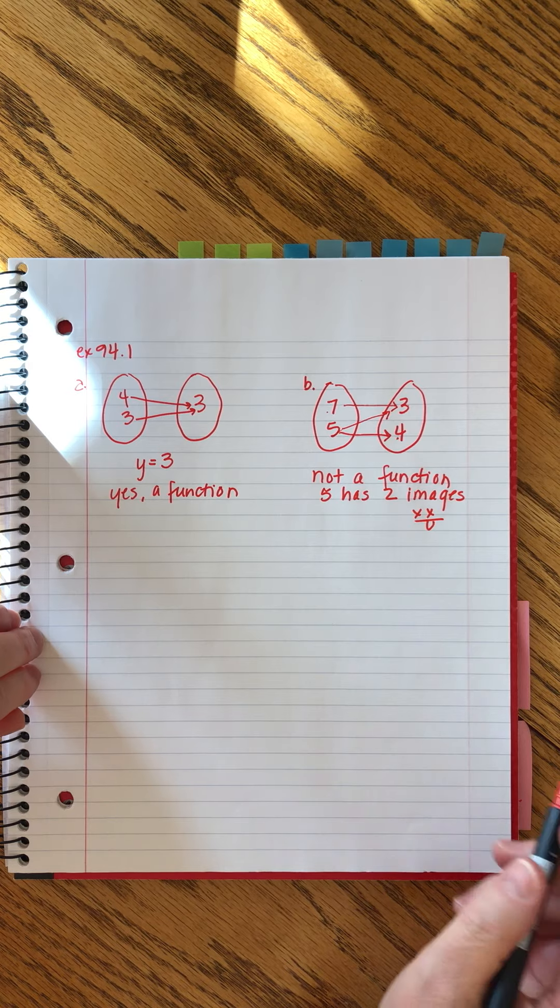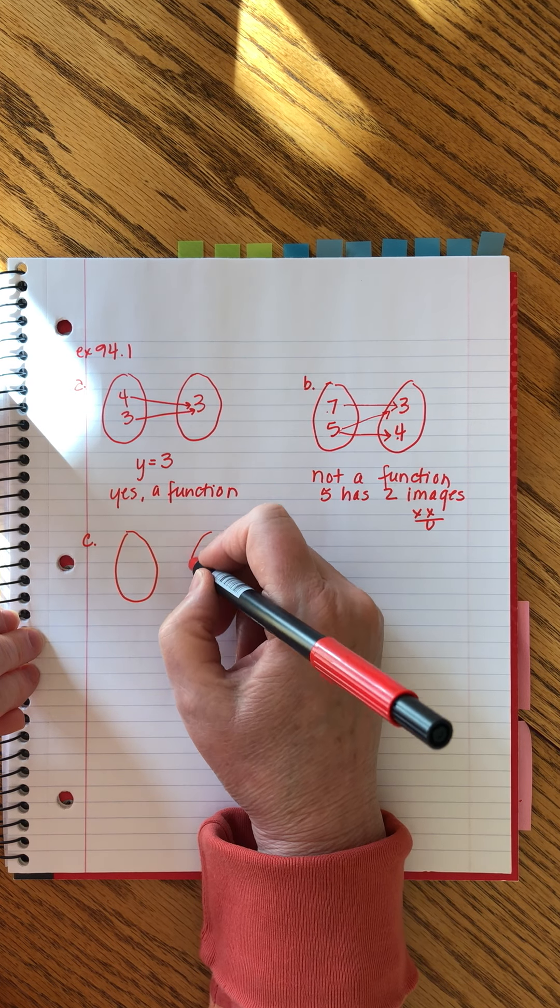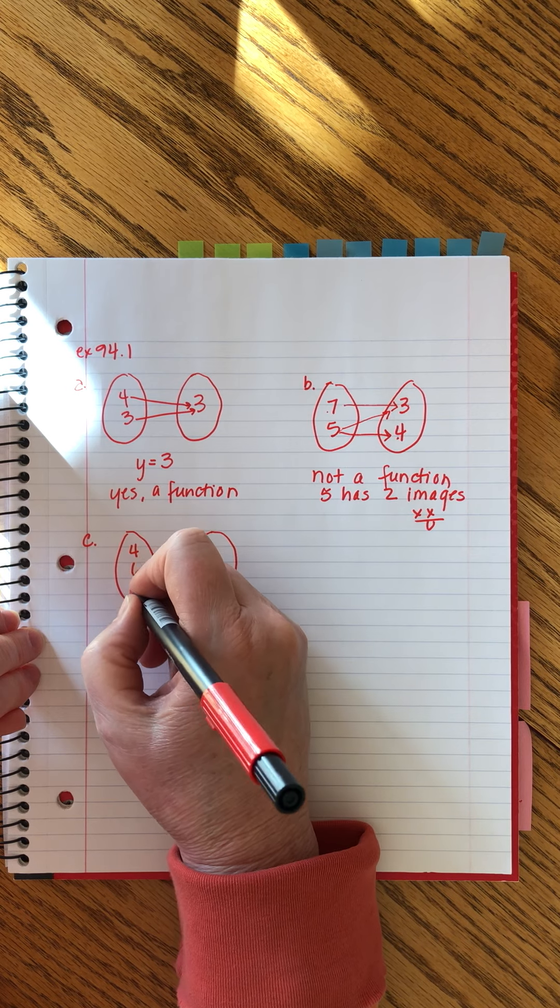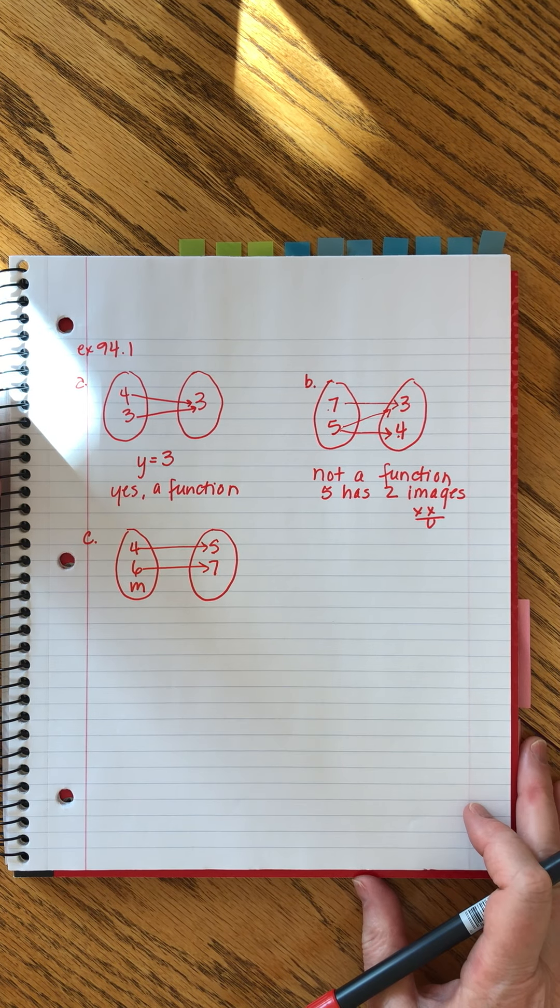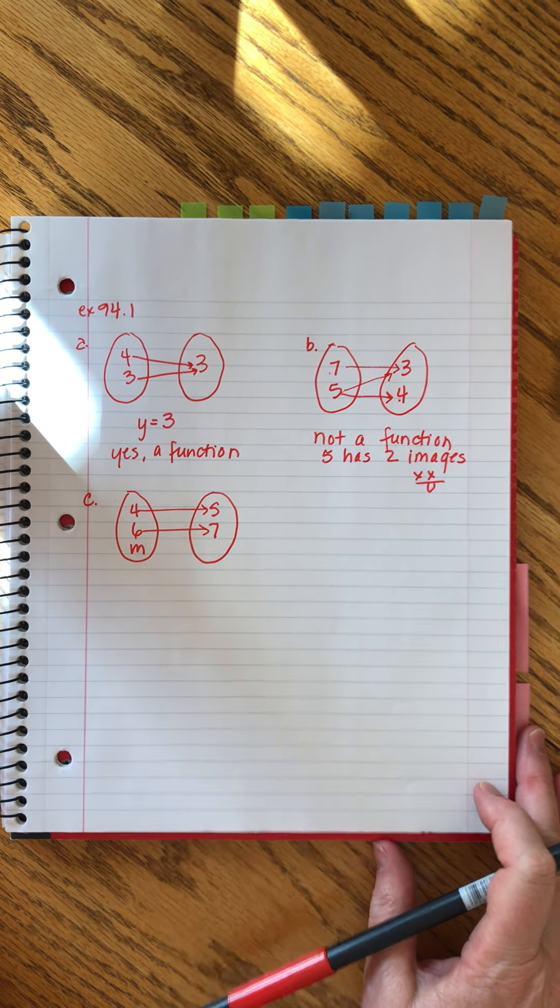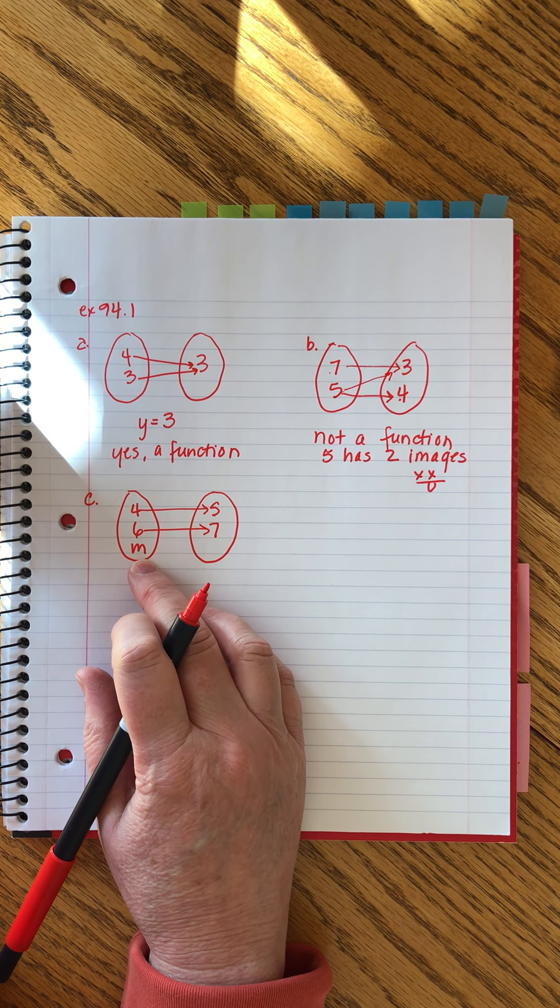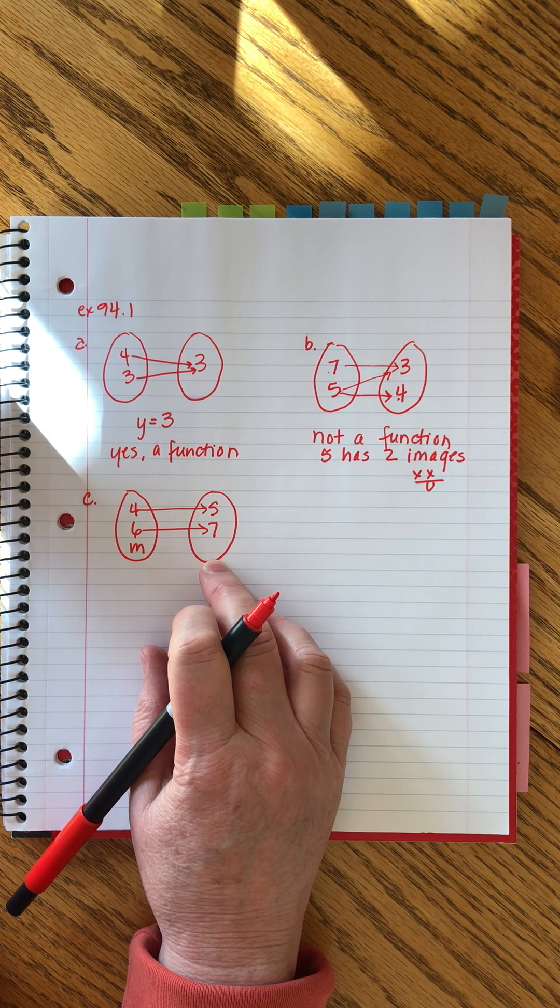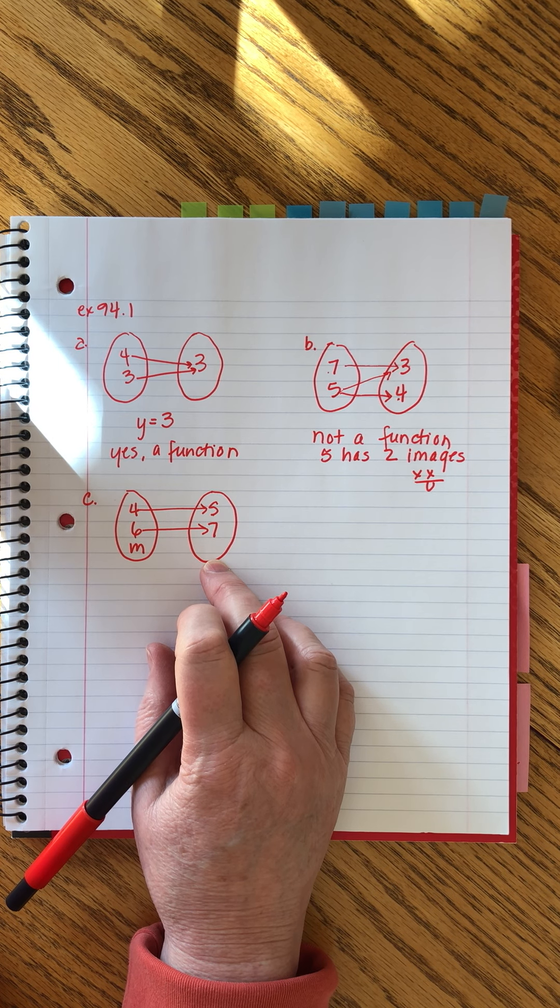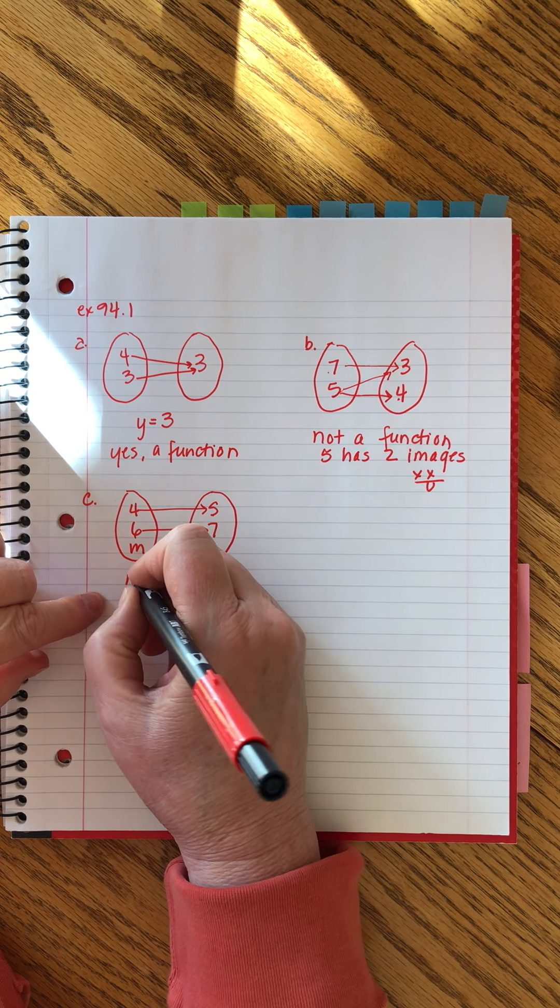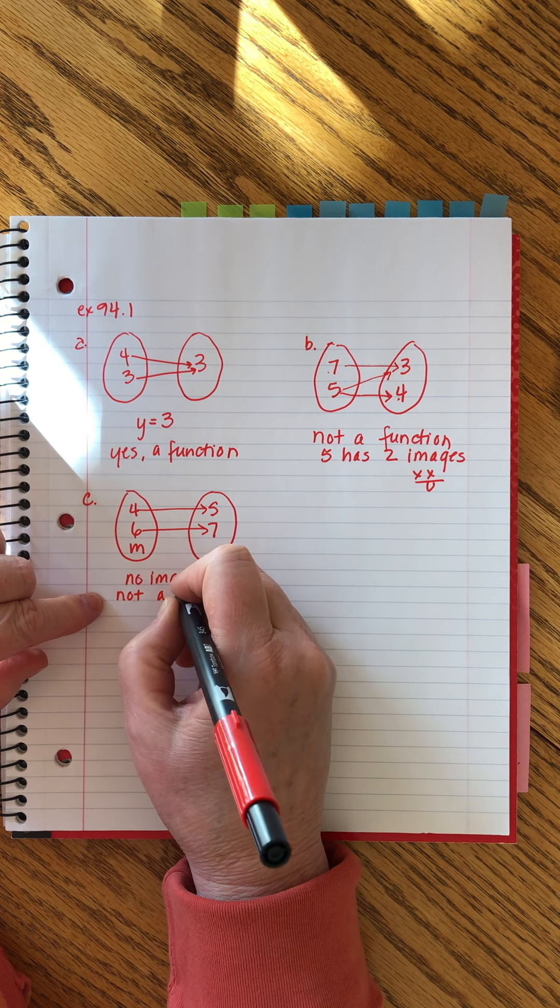Let's look at C. This goes up through D. Check this out. Four is paired with five. Six is paired with seven. Okay, that looks cool. M, which is fine. You can have a letter as an input, but it does not have any sort of image. It's paired. There's no image for M. So that's a deal breaker. This is not a function.